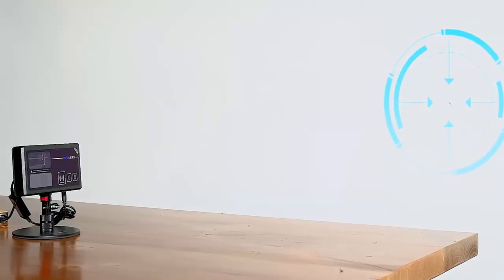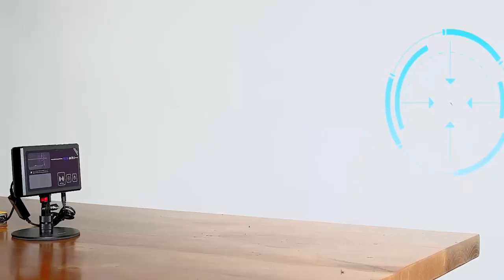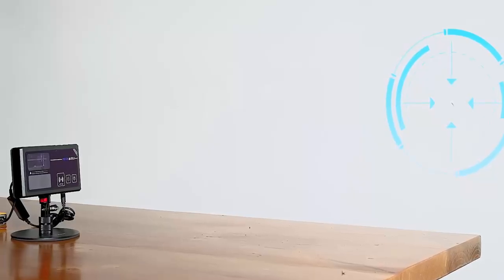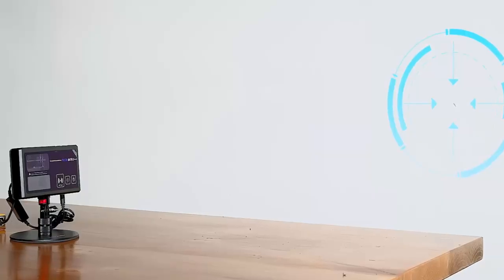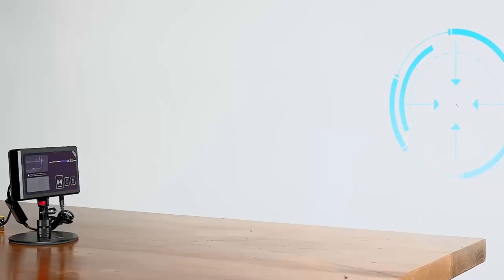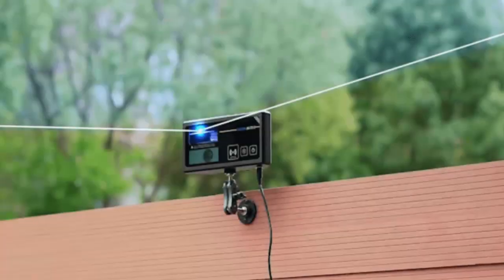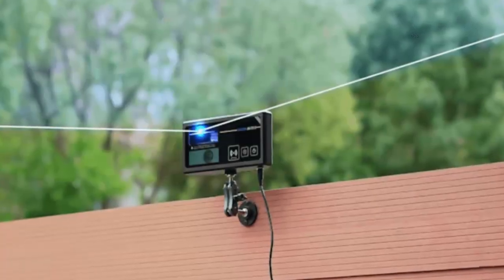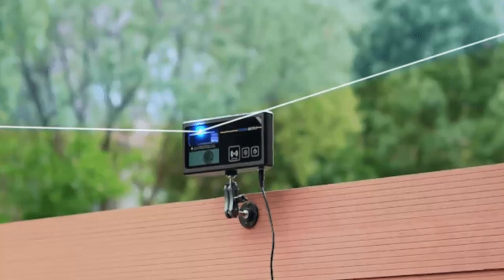It works like this: a lidar sensor scans the air in real time, spotting insects as small as two millimeters moving under one meter per second. Once a mosquito enters its field of view, a precision laser locks on and takes it down instantly.